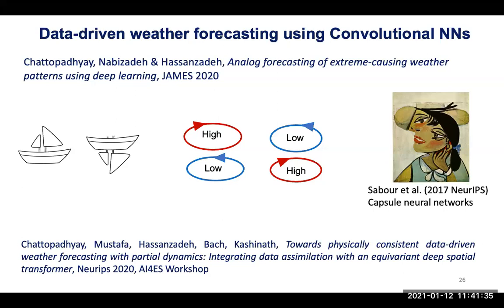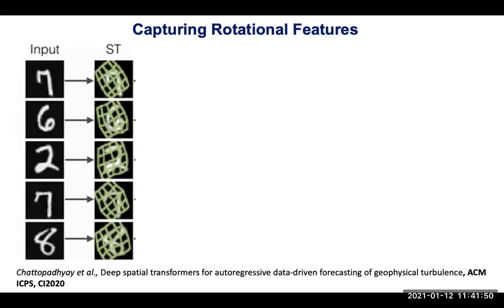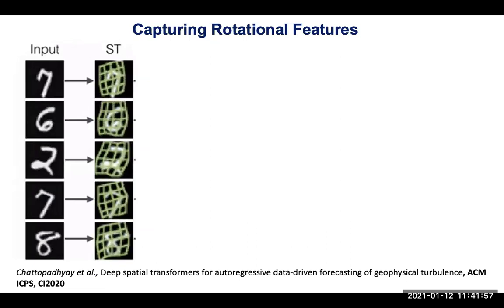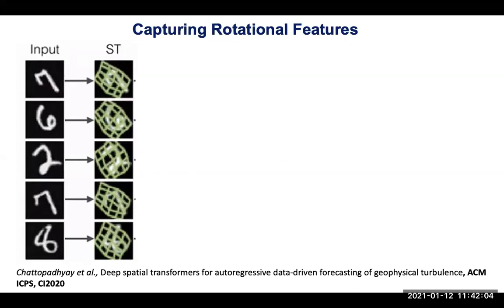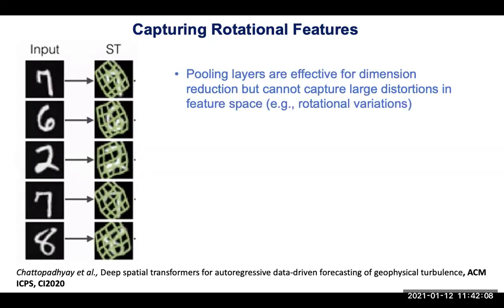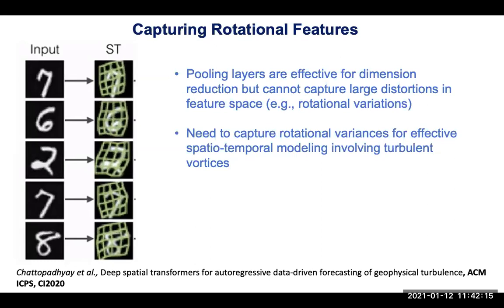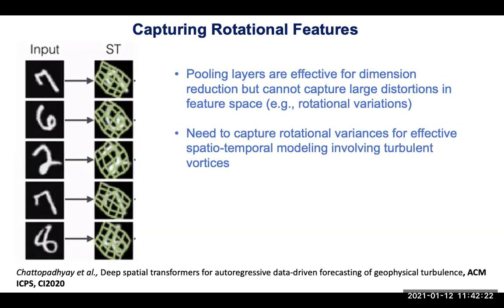Most of this work is about a paper we're submitting and parts of a workshop paper we presented at NeurIPS 2020. The idea revolves around capturing rotational features. If you have an input that is rotating, your architecture should by construction be able to detect that rotation in feature space. The reason convolutional architectures cannot do that is because their pooling layers cannot capture large distortions in feature space.